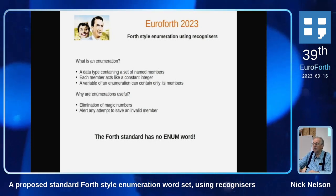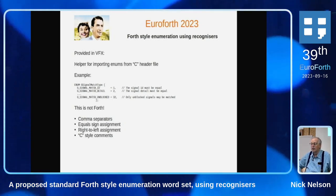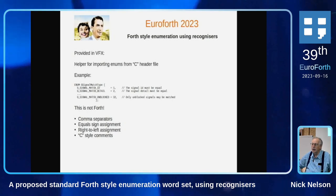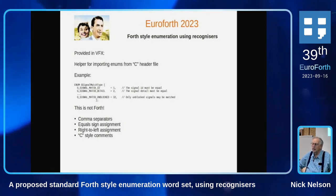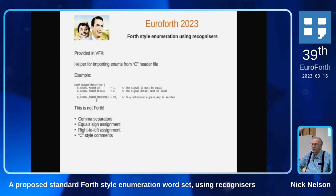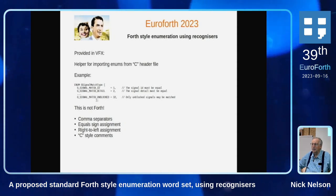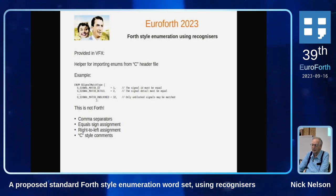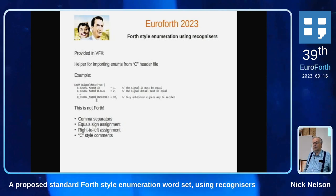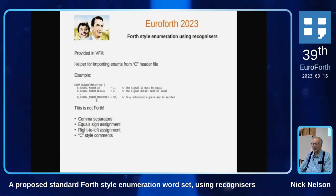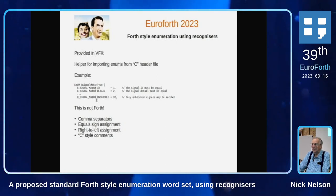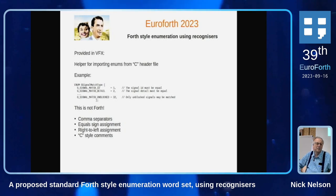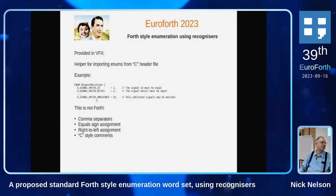When I say the fourth standard has no enum word, actually in VFX Forth we do have two slightly different enum words, but those are designed to make it a little bit easier to bring things in from C header files. There is a highly simplified, cooked example of a VFX enum function there. And if you're a Forth programmer, you immediately start getting the collywobbles because we have comma separators, equal assignment, right-to-left assignment, and C-style comments. So when you see a chunk of this in your own code, it really stands out like a sore thumb.